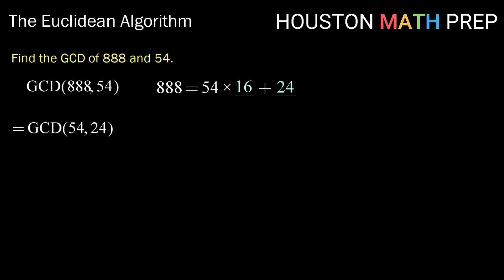Now those are much more manageable, and at this point you could stop and use the prime factorization method or any other method that you like, but we could also continue. We could rewrite 54 as 24 times some number plus another number. Well, 24 times 2 is 48, which leaves us with a remainder of 6. So now, getting even smaller here, GCD of 24 and 6 is equivalent to our GCD of 888 and 54.